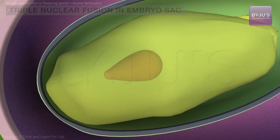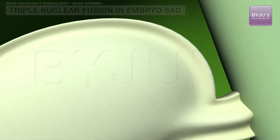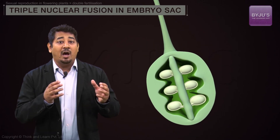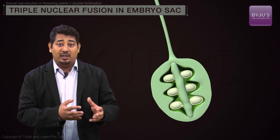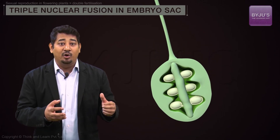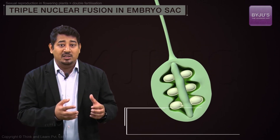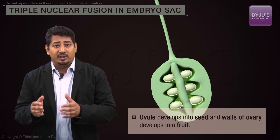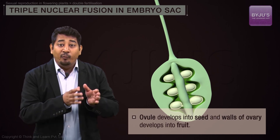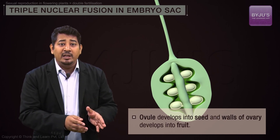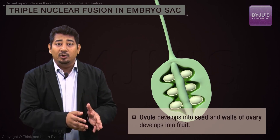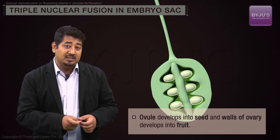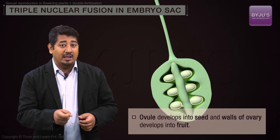Densely packed cells in the tissue around the ovule form the tough seed coat, an outer layer that protects the developing embryo from water loss and other damage. While the ovule develops into a seed, the walls of the ovary develop into a fruit, another structure that distinguishes angiosperms.